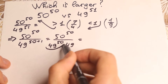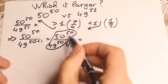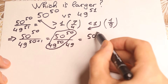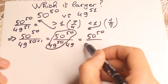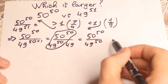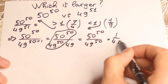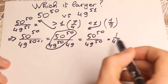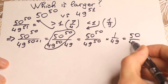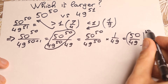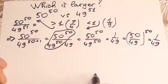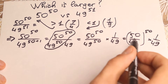Now let's group the elements with the same powers. We can write this as 50 to the power of 50 over 49 to the power of 50, step by step, times 1 over 49. Since we now have different bases but the same exponent, we can write this as (50 over 49) to the power of 50, times 1 over 49.